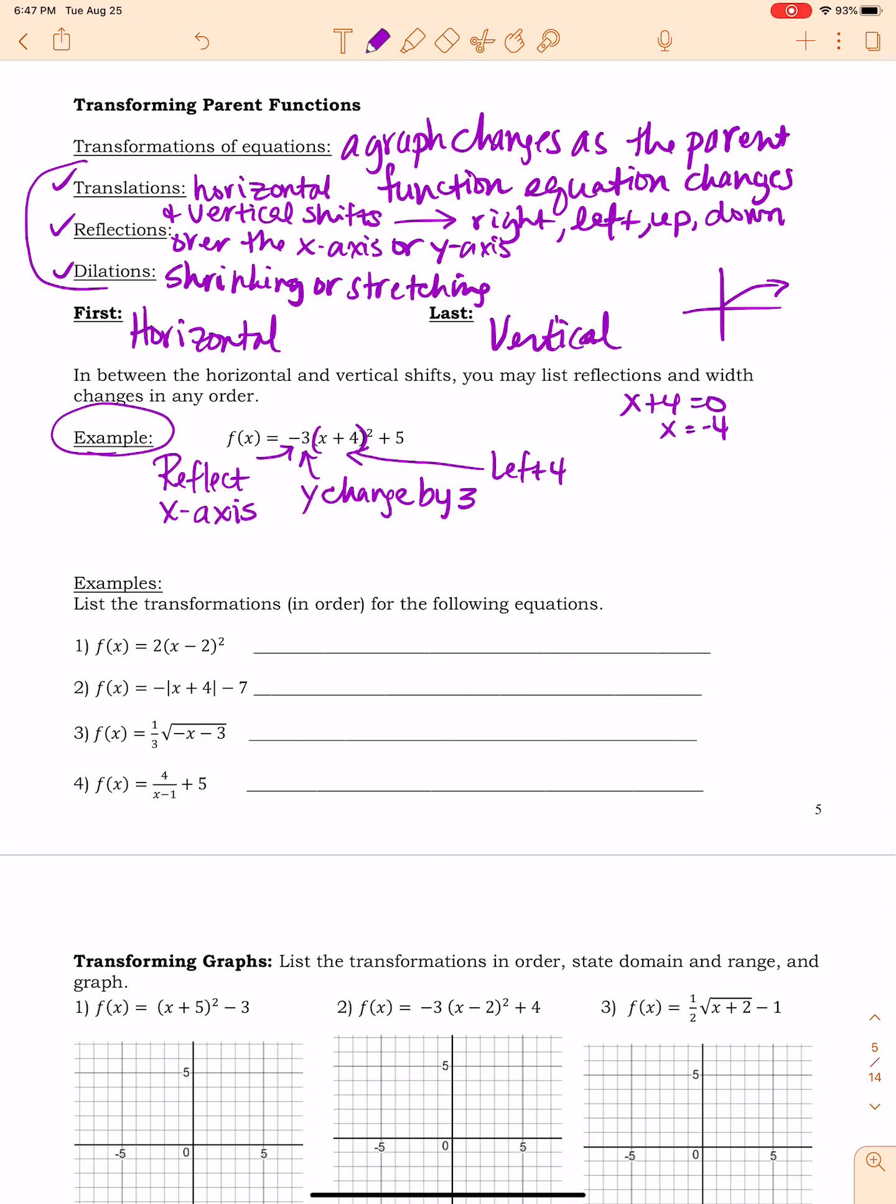Okay. And then, of course, this 5 here, this is the very last thing. This means a shift up of 5. That positive sign is not inside parentheses, so it does exactly what you would expect it to. So if I was going to list these in order, I was just reading my equation.